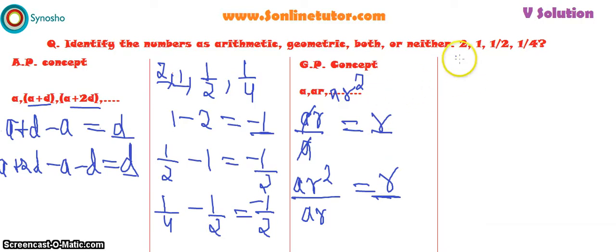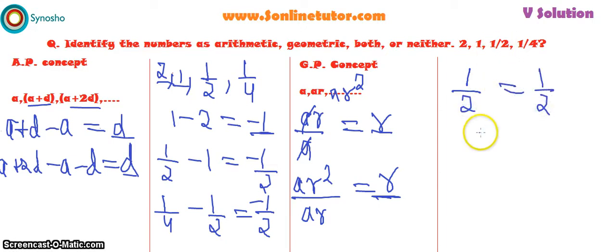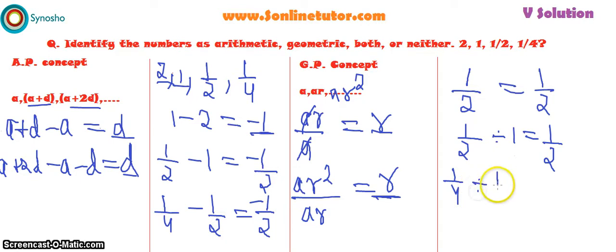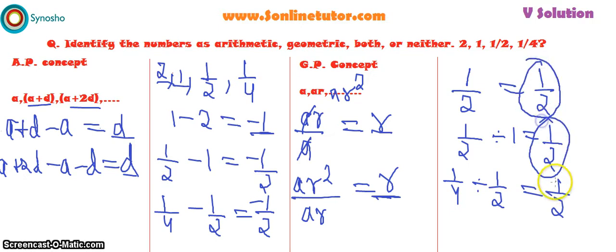To check if the series is geometric, we take the second term divided by the first: 1 divided by 2 gives 1/2. Then 1/2 divided by 1 gives 1/2 again. And 1/4 divided by 1/2 again gives 1/2. Since the ratio is the same at each step, we can say it is a geometric progression. So the answer for this series is geometric progression.